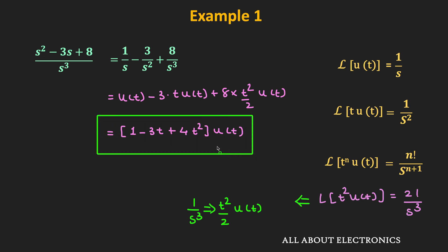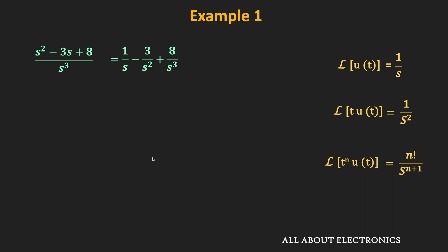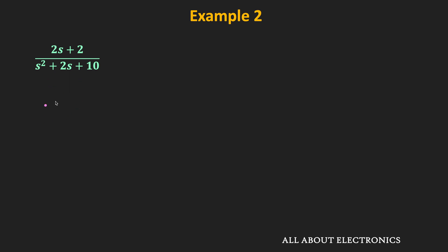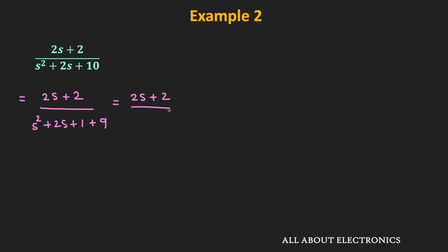In this way, using the Laplace transform table we can easily find the inverse Laplace transform. Let us take another example. The function X(s) equals (2s + 2) / (s² + 2s + 10). In the denominator we can write this as (2s + 2) / (s² + 2s + 1 + 9), which is (2s + 2) / ((s + 1)² + 3²).